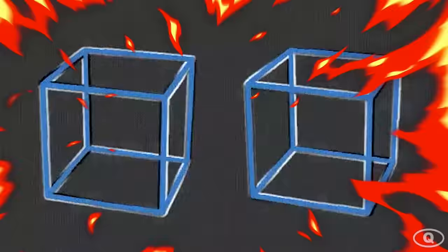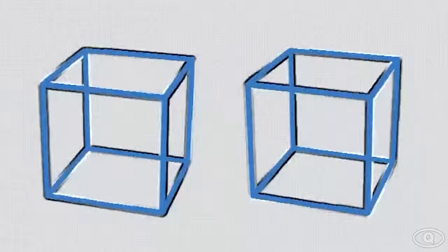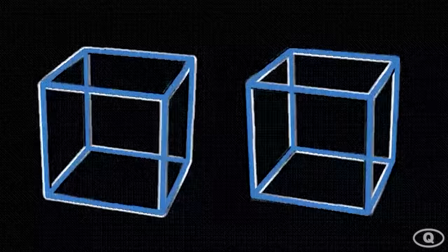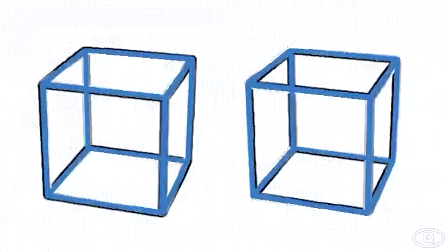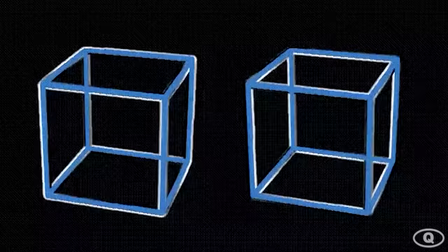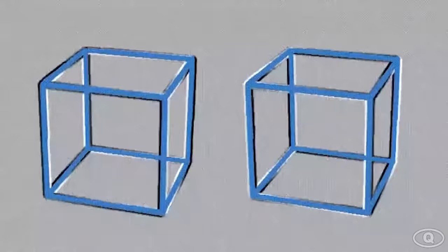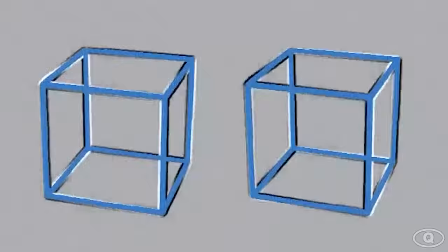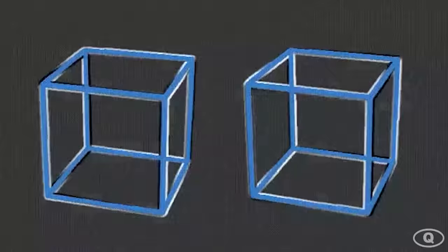So we have some spinning cubes that look like they're rotating, right? Well, what if I told you that the cubes are perfectly still and not moving at all? Don't believe me? Try placing your finger on any part of the cube and you'll soon find out that the cubes are perfectly still.